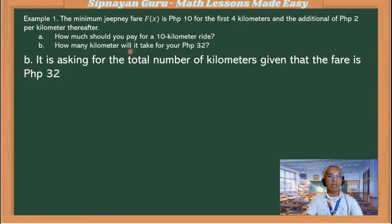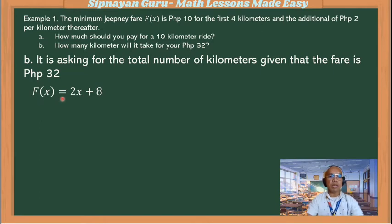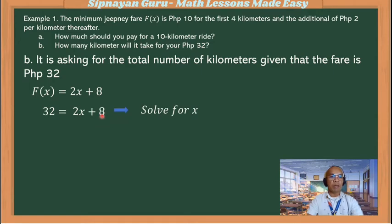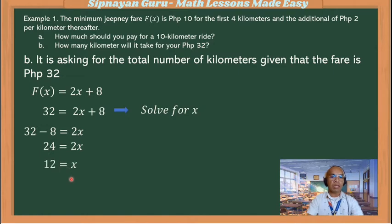Second question: how many kilometers will it take for your 32 pesos? It is asking for the total number of kilometers given that the fare is 32 pesos. The function f(x) = 2x + 8. Since the total fare is 32, substitute: 32 = 2x + 8. Solve for x by transposing 8 to the left: 32 minus 8 equals 2x, so 24 = 2x. Divide both sides by 2 and our x is 12.